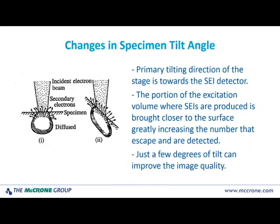In the SEM, we also have the option of tilting the sample to improve it. On the far left, we have our surface of our sample normal to our beam, and the beam is impinging into it forming a normal excitation volume. But if we take our sample and tilt it — or take our stage, if you have this capability — then what happens is the excitation volume is brought closer to the surface. Because it's brought closer to the surface, now the region generating secondary electrons produces more secondary electrons. So they have less solid material to pass through. We have artificially pulled this excitation volume closer. Just a few degrees of tilt can make an amazing difference in your image quality. If you don't have a tilting stage, just take your substrate and configure some way to put something under one side of it and tilt it over a little bit.